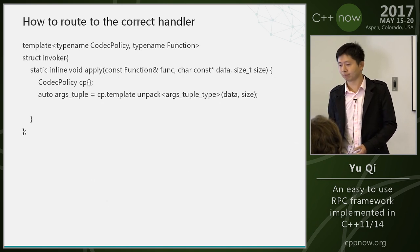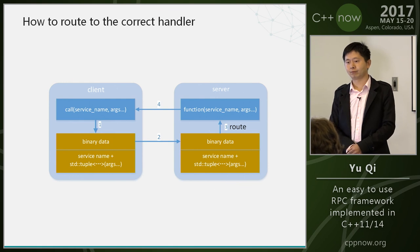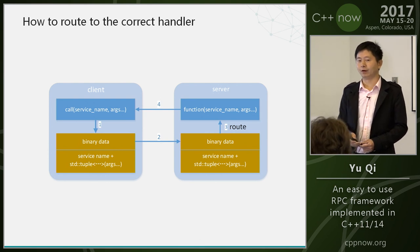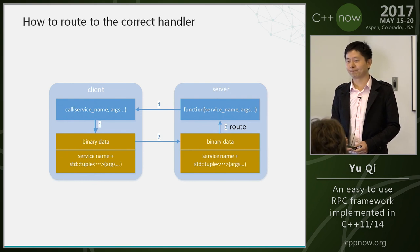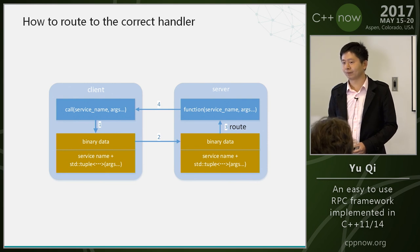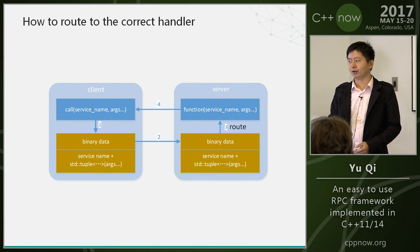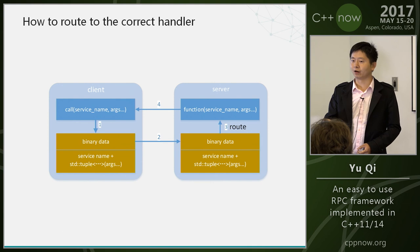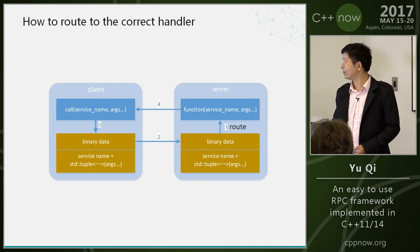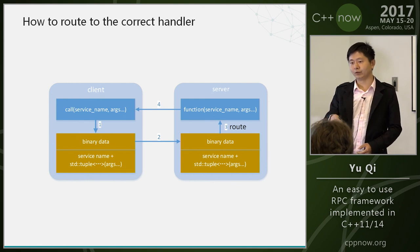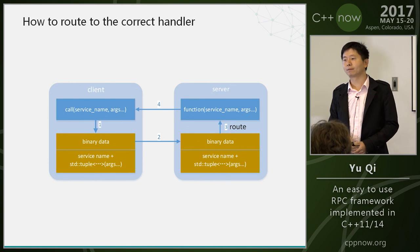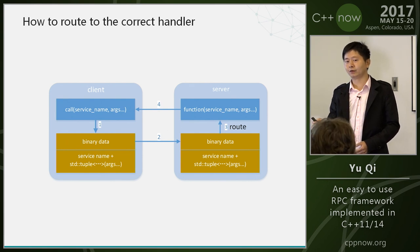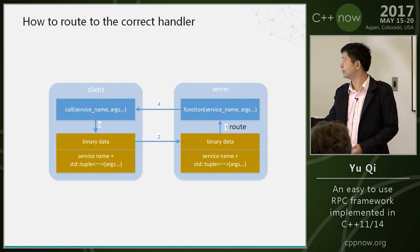If I understand correctly — when you receive the binary data, you deserialize it to the service name and the tuple of arguments before you know which function to call. Yes — the binary data contains the service name, which is the key. The arguments are the rest of the data. You can get the std::function by the key and then route to the real function, because the real function is hidden inside the std::function.